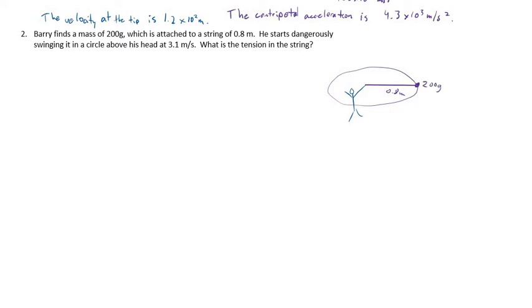It's always nice to have a diagram just so we're sure we understand what's going on. We've got a mass of 200 grams, a radius of 0.8 meters, and a velocity of 3.1 meters per second. We're asked to find the tension in the string. You might be thinking, whoa, tension in the string? This goes back to some other kind of concepts.